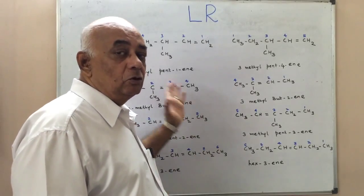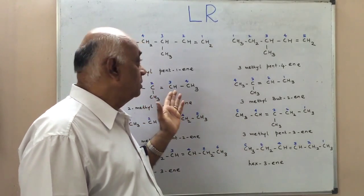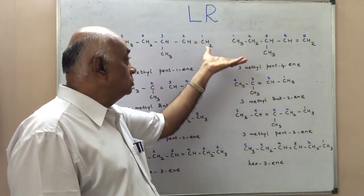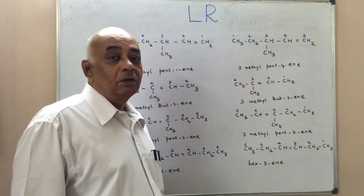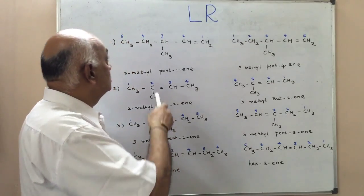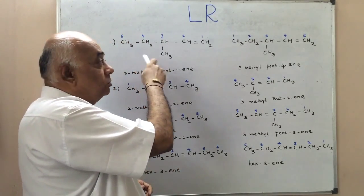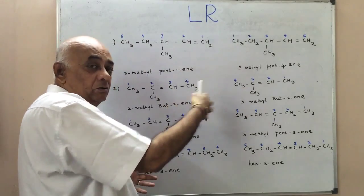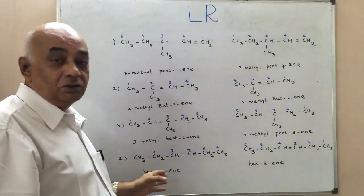Let us now apply the two rules we have learned in naming some of these organic alkenes and alkynes for practice. Have a look at the first compound. The same structures are written on the side. There are four such structures.